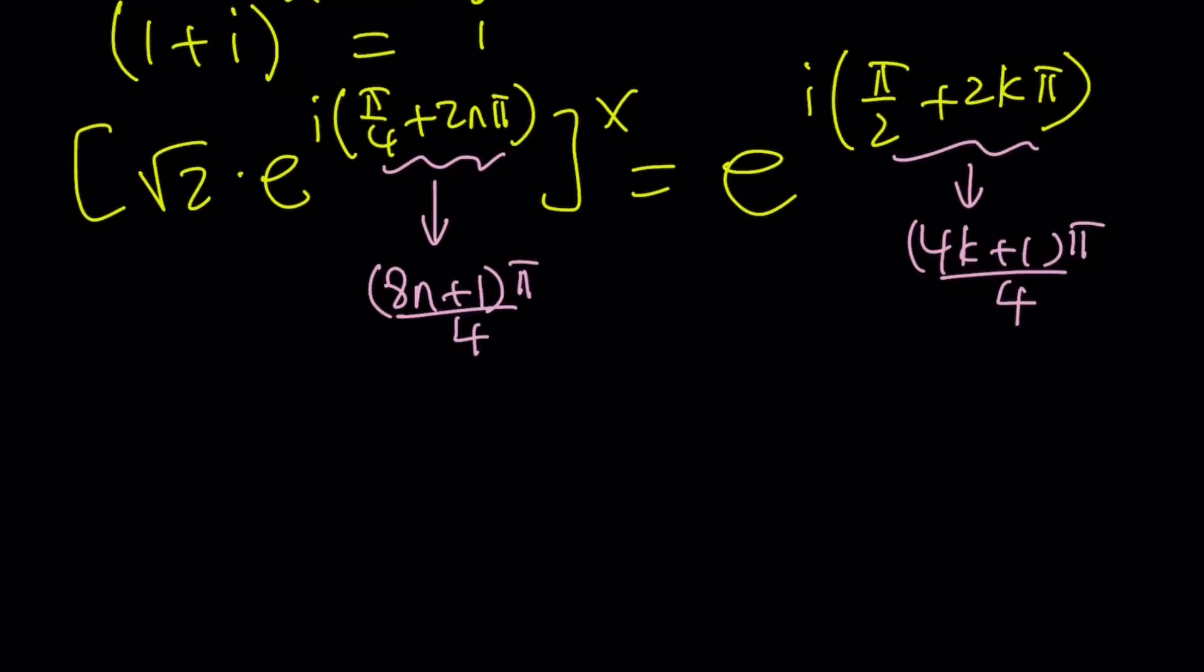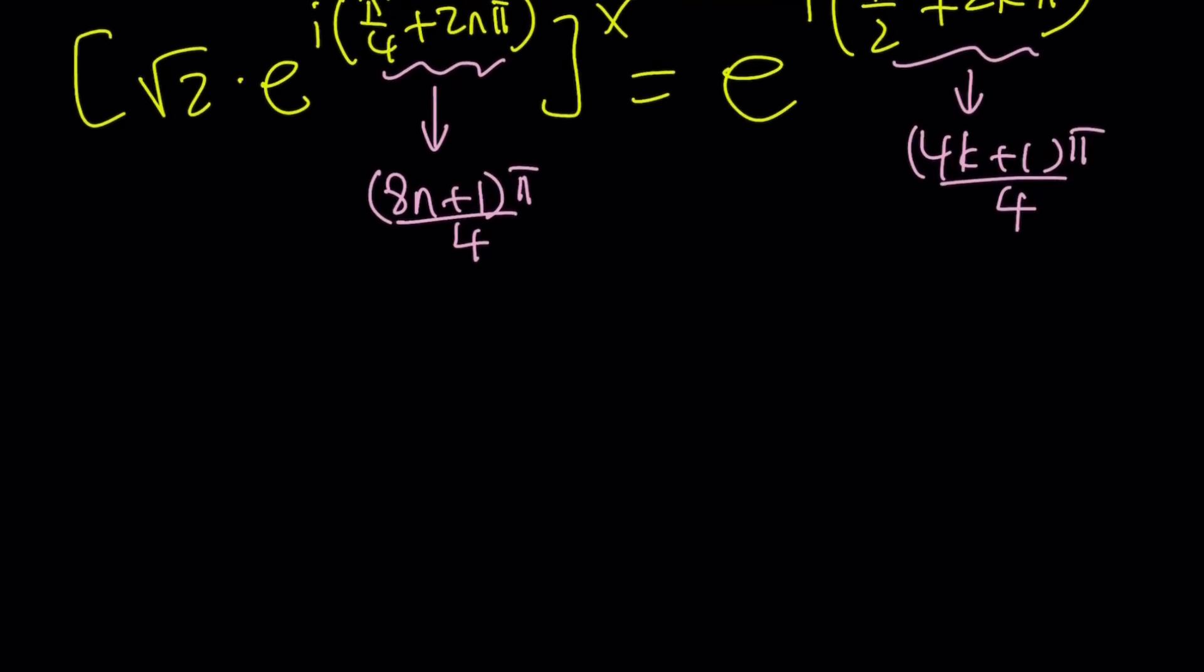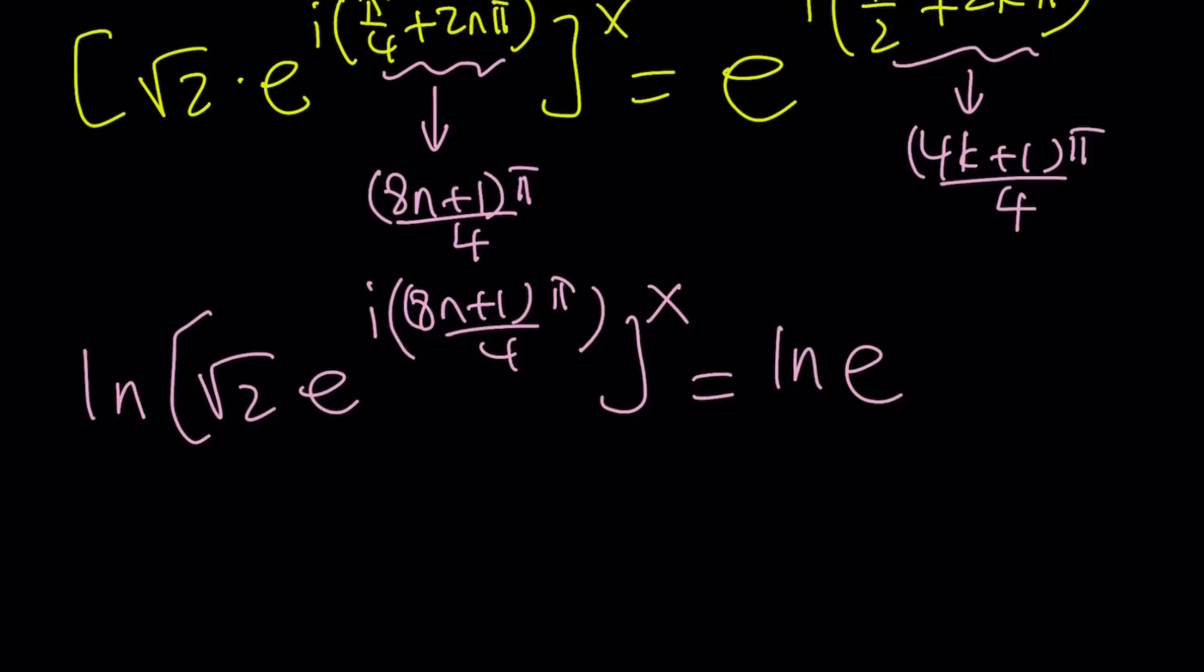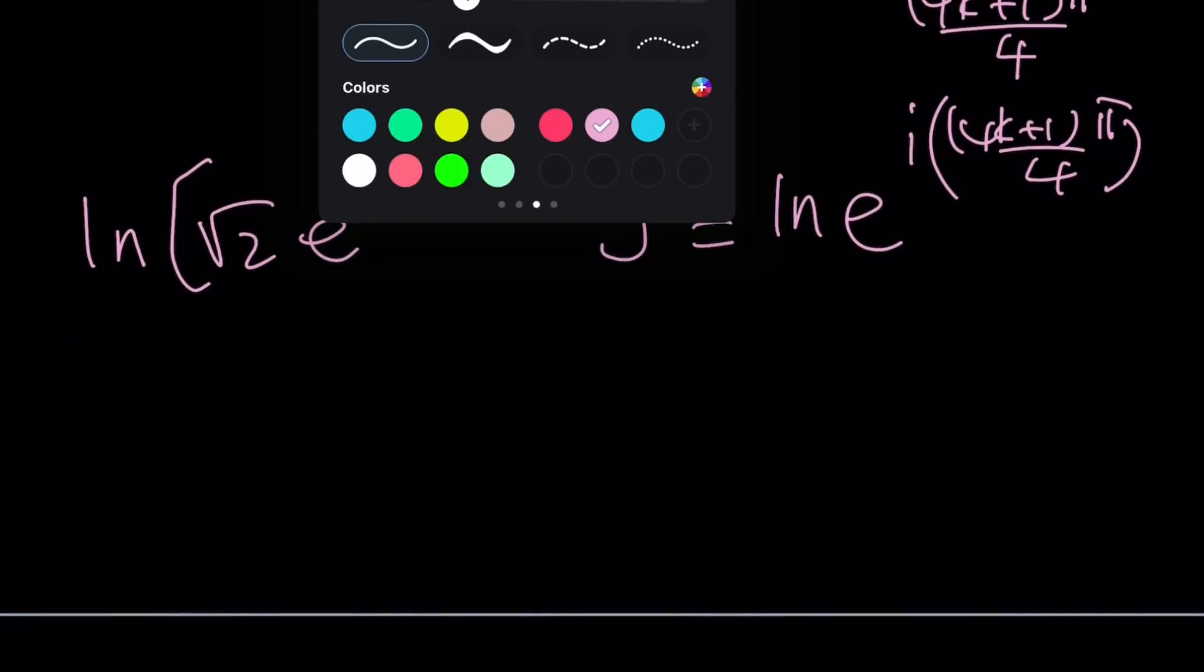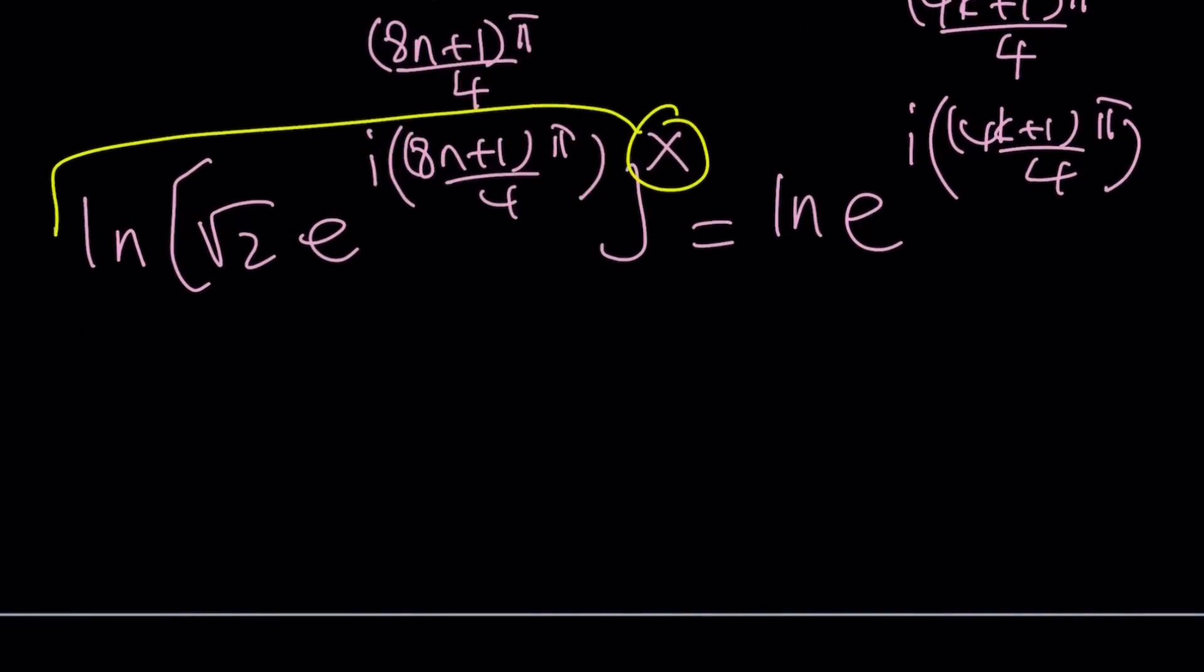Let's ln both sides. We're going to get ln(√2·e^(i(8n+1)π/4))^x = ln(e^(i(4k+1)π/4)). When you ln or log both sides, this power is going to move. That's actually the very reason we do this. We're going to get x·ln from here.